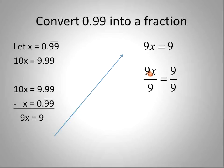9 divided by 9 is 1. 1 times x leaves us with x on the left side. 9 over 9 reduces down to 1 over 1, which can also be written simply as 1. So in other words, x, which started out as 0.999 repeating, is actually equal to 1 using this proof or this technique of converting repeating decimals into fractions.